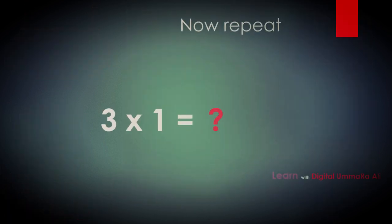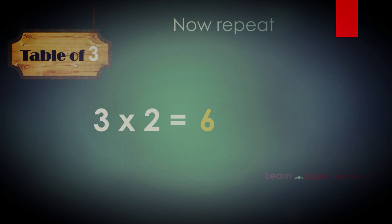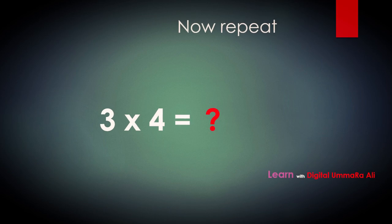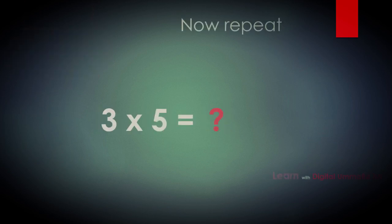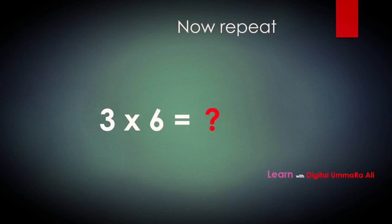Let's repeat together and learn the three table. Three ones are — yes, tell me — three ones are three. Three twos are — three twos are six. Three threes are — three threes are nine. Very good, well done! Three fours are — three fours are twelve.